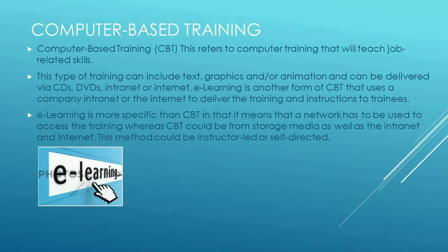Computer-based training refers to computer training that will teach job-related skills. This type of training can include text, graphics, and animation, and can be delivered via CDs, DVD, internet, or intranet — which is an internal internet to a company, so that only people who work for the company can access it. E-learning is another form of computer-based training that uses a company internet or intranet to deliver the training instruction to trainees.